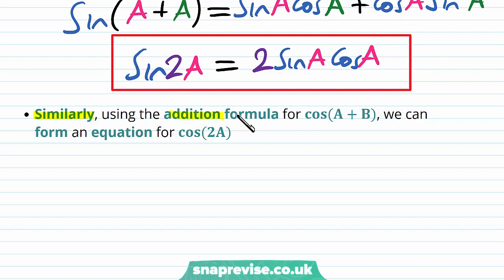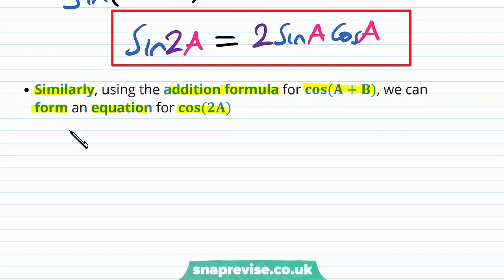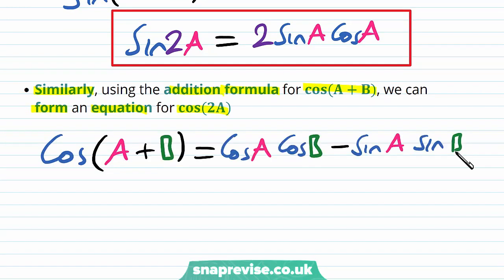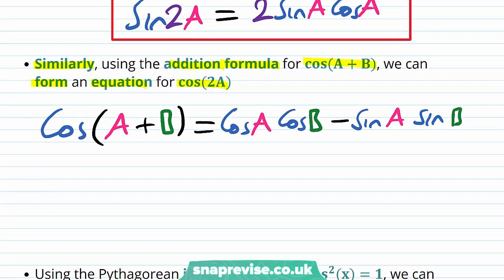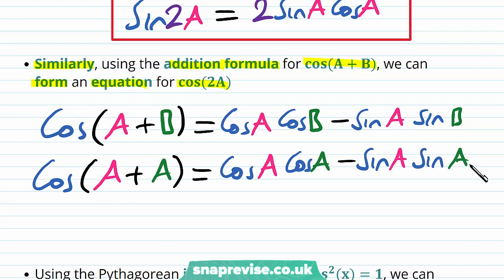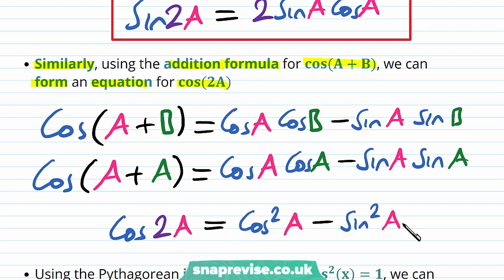Similarly, using the addition formula for cos of a plus b, we can form an equation for cos of 2a. We know cos of a plus b equals cos a cos b minus sin a sin b. Letting b equal a, we have cos of a plus a on the left hand side, and the right hand side is cos a cos a minus sin a sin a. Therefore cos of 2a equals cos squared of a minus sin squared of a.